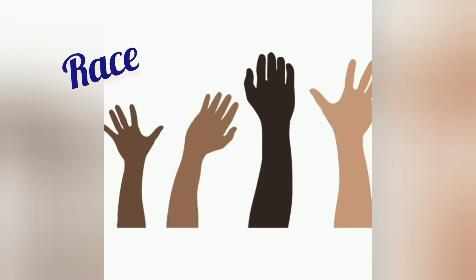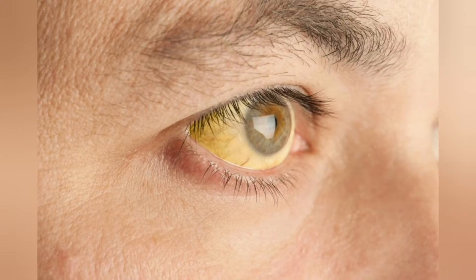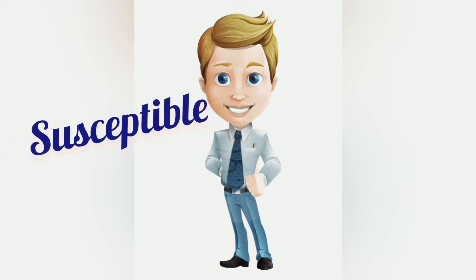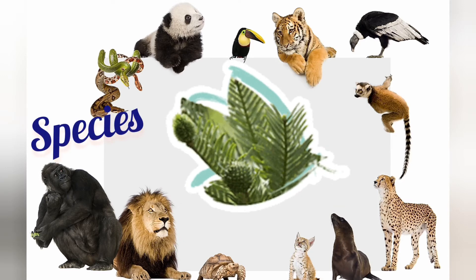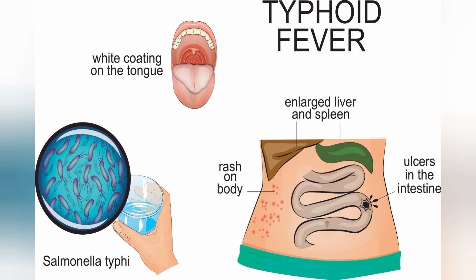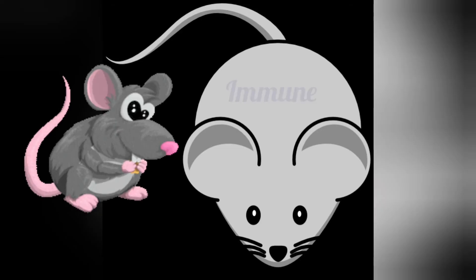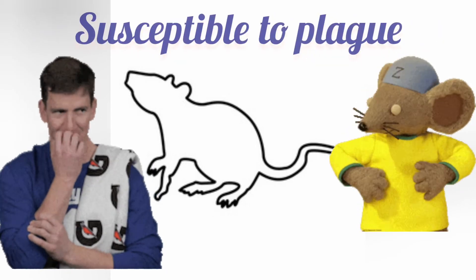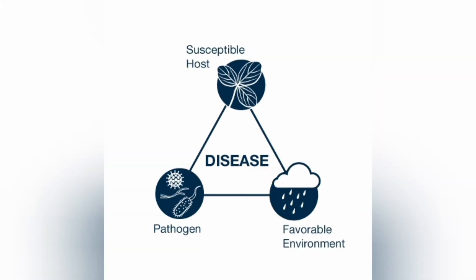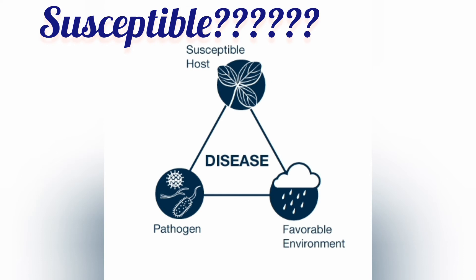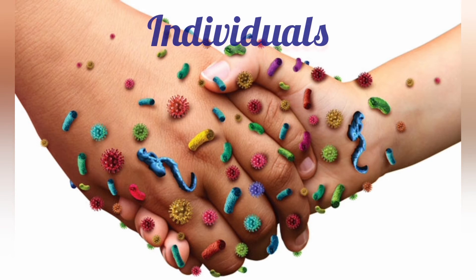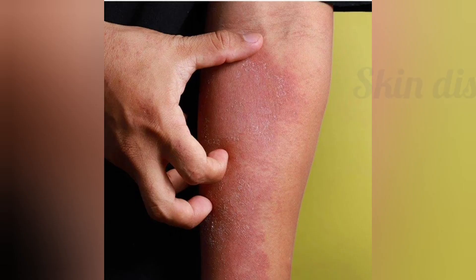Then comes race. While the negroes have a high resistance to yellow fever, the white races are very susceptible to it. Then comes species. Men are susceptible to typhoid fever whereas mice are immune to it. Fowls are immune to plague whereas men are susceptible to it. Susceptible means easily affected by the disease or the germs. Now comes individuals — some persons have more resistance against cold and skin diseases than others.